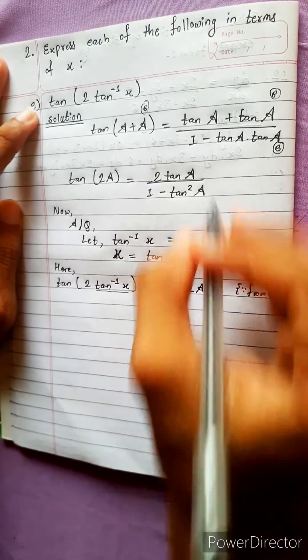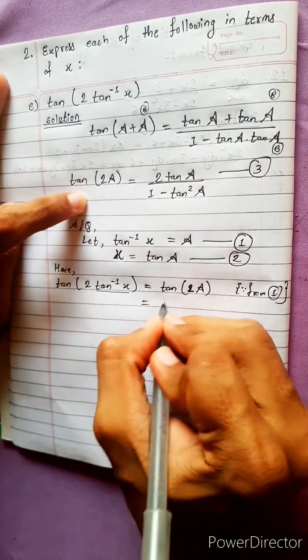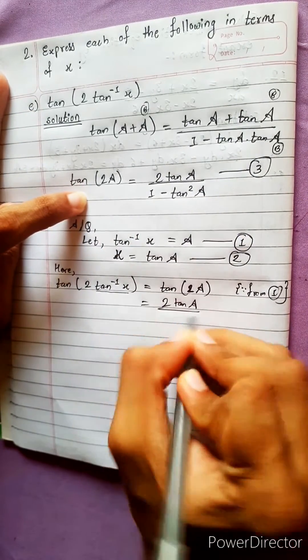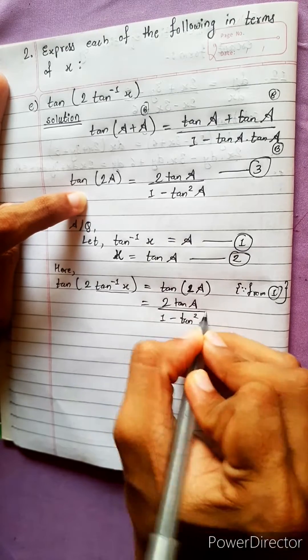Now, tan 2A formula, look here, equation 3. tan 2A equals to 2 tan A divided by 1 minus tan square A. Okay.